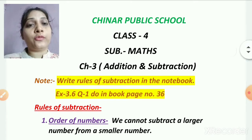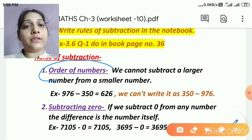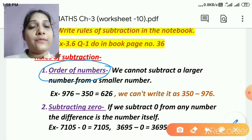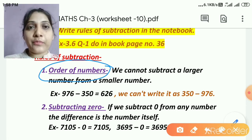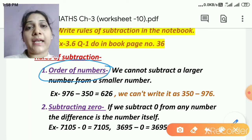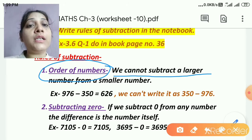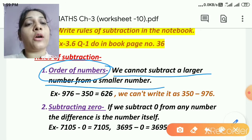I am explaining the first rule, which is the order of numbers. Children, when we learn addition, I told you that we can add numbers in any order. But in subtraction, we cannot change the order. Because every time I have taken your class related to subtraction, I always told you that from the bigger number, we have to subtract the smaller. We cannot subtract the bigger number from the smaller number. So the first rule is that order of numbers matters a lot.